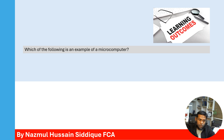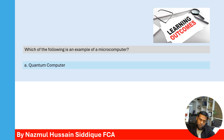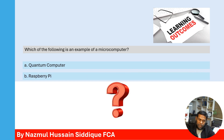Next question: Which of the following is an example of a microcomputer? Option A: Quantum computer. Option B: Raspberry Pi. The correct answer is Raspberry Pi — Raspberry Pi is a microcomputer. A quantum computer is not a microcomputer.